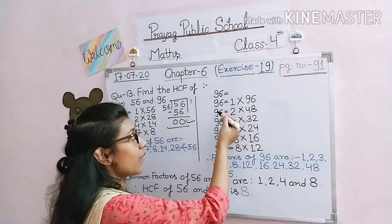Your homework is: from Exercise 19, question number 13 — 'Find the HCF of' — solve two questions in your homework copy. I'll show you on screen which two questions to solve. That's all for today. Thank you.